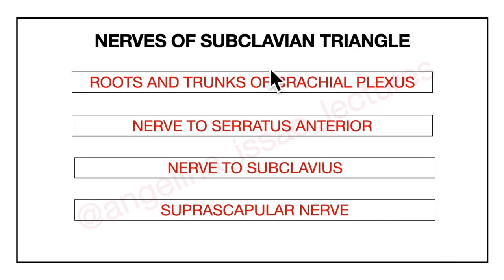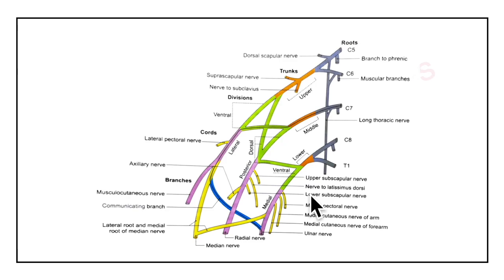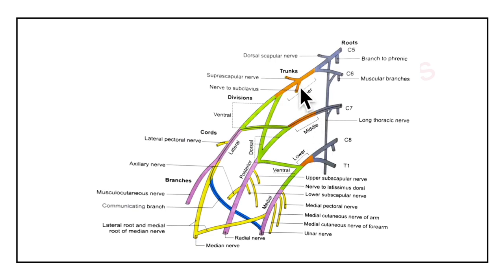Now let's learn about the nerves of the subclavian triangle: the roots and trunks of the brachial plexus, the nerve to serratus anterior, the nerve to subclavius, and the suprascapular nerve. The three trunks of the brachial plexus emerge between the scalenus anterior muscle and the scalenus medius muscle and carry the axillary sheath around them.